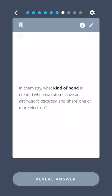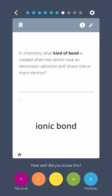In chemistry, what kind of bond is created when two atoms have an electrostatic attraction and share one or more electron? Ionic Bond.